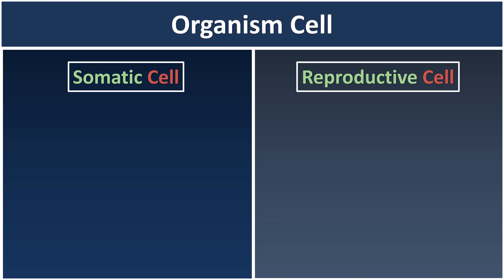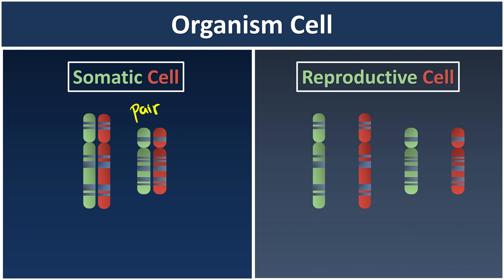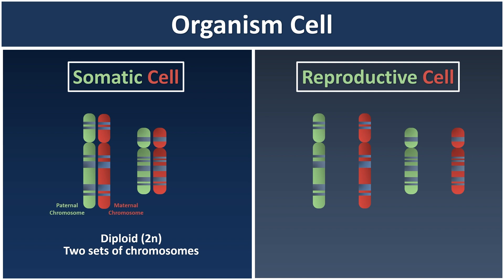Now we know somatic cells and reproductive cells are examples of organism cells. If we look deeper into somatic cells, the chromosomes come in a pair. But for reproductive cells, the chromosomes only come in a single set. For the ones that come in a pair, we say it is a diploid cell, which consists of two sets of chromosomes — one from the father, called a paternal chromosome, and one from the mother, called a maternal chromosome.